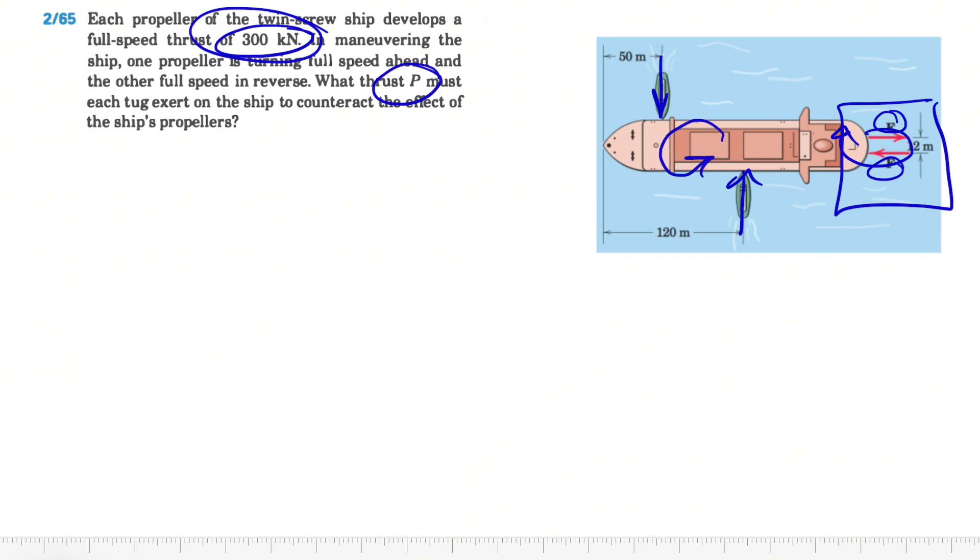For finding the couple, we know couple at the end is the moment, and what we care about in finding the couple is the force and the d, where the d is the distance between the two forces. And if we look at these two F's in here, we can see the distance between them is 12. So basically we have 300 times 12 as the moment or the couple of these two forces, which will be kilonewton meter.